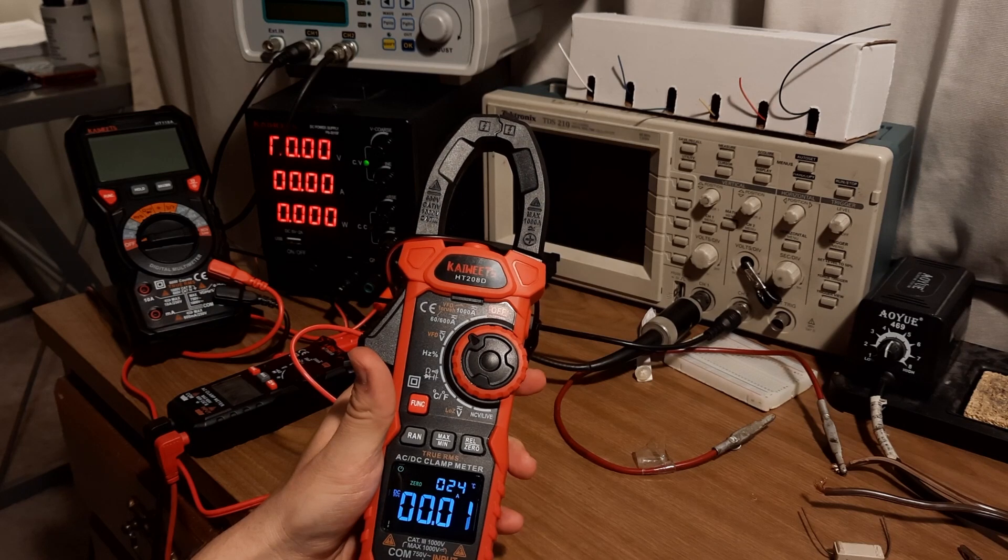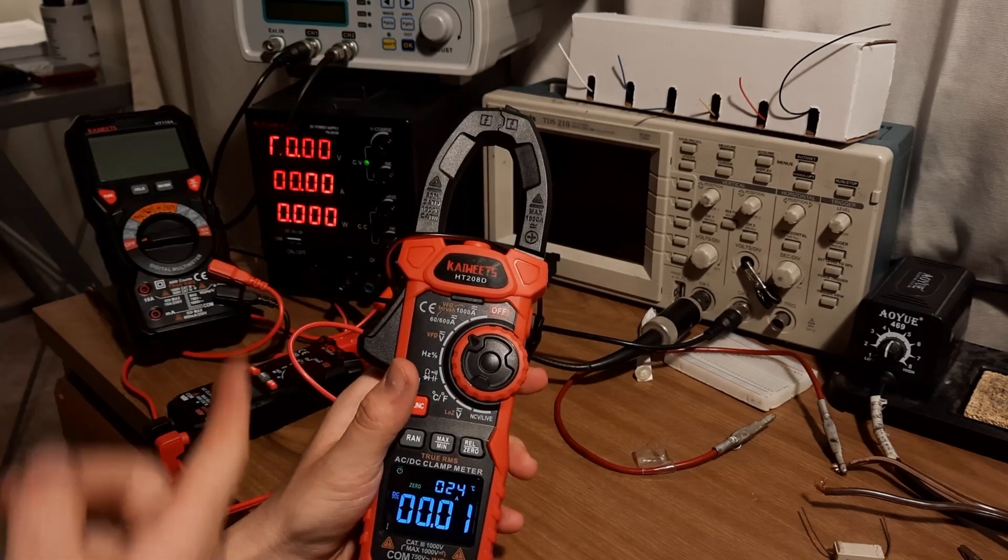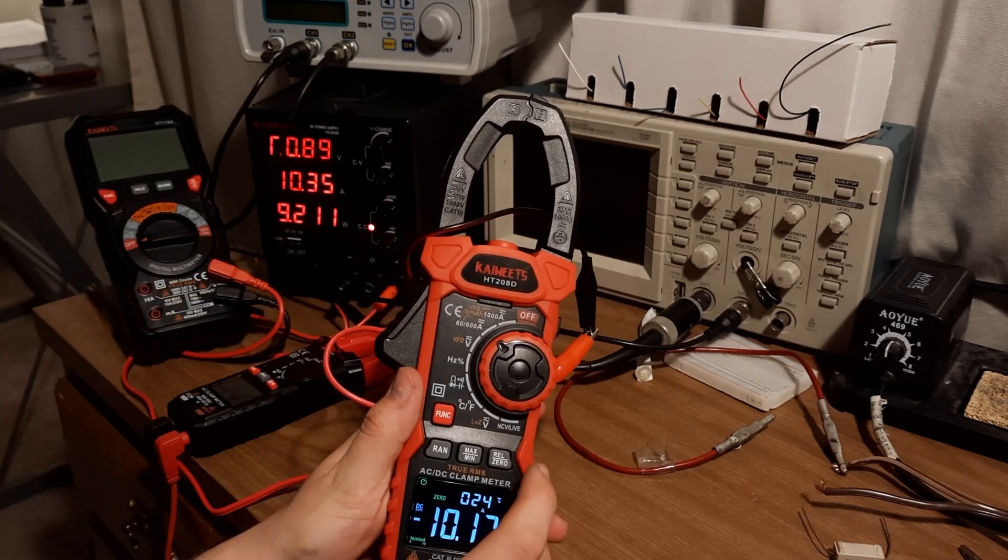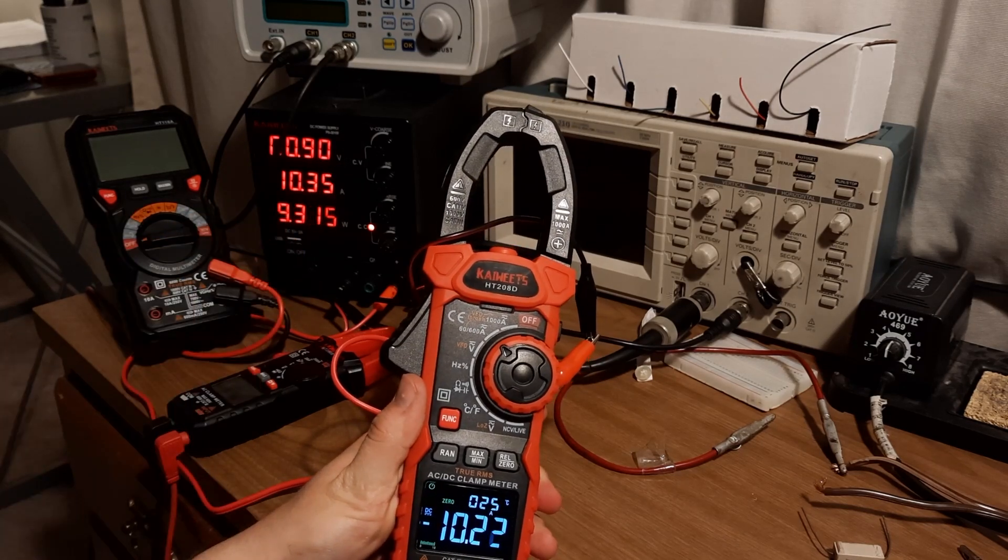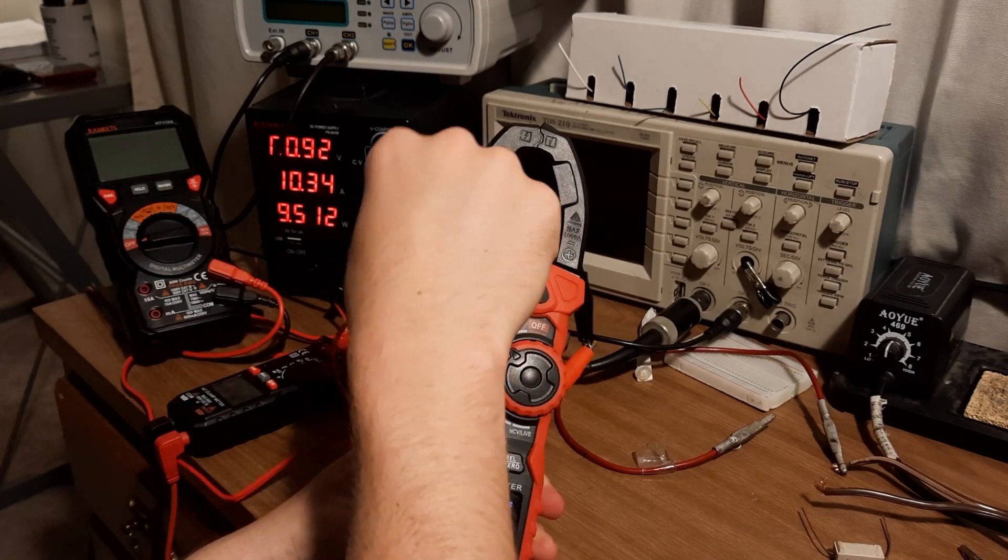This DC clamp meter, in fact, does have a Hall Effect sensor somewhere in this ring, and you can see that it works, because if I supply a DC current, wow, there you go, 10.2 amps, 10.3 amps, it's pretty exact. You can see it's measuring the amount of current flowing through that wire.